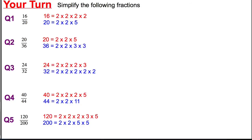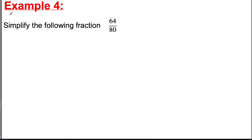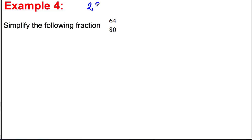Lastly, have a go at simplifying a fraction without being given the prime factor decomposition of 64 and 80 — you have to find these yourself using our previous knowledge. Our prime numbers are 2, 3, 5, 7, 11, 13. We're going to write 64 and 80 as a product of primes using factor trees, as we've done in a previous video.